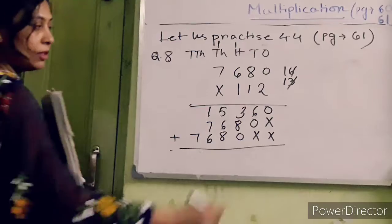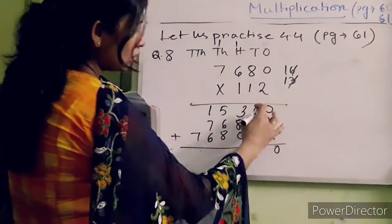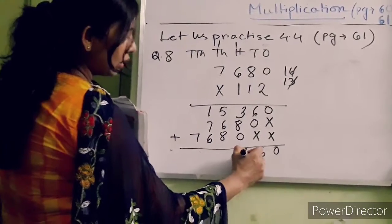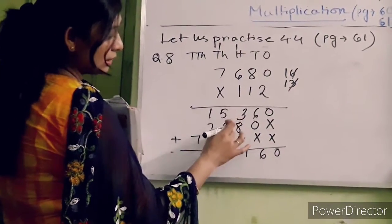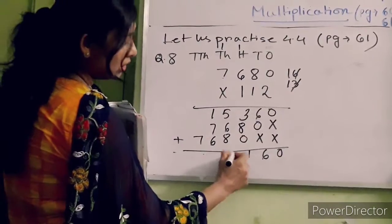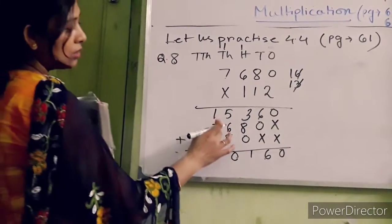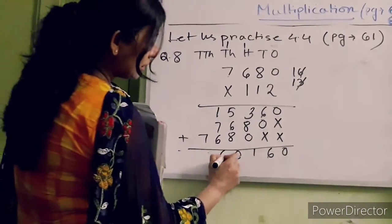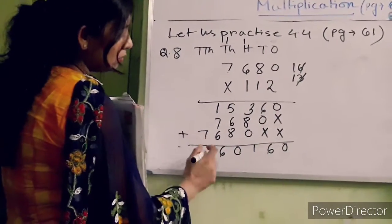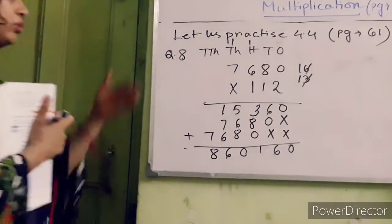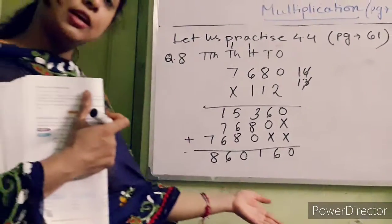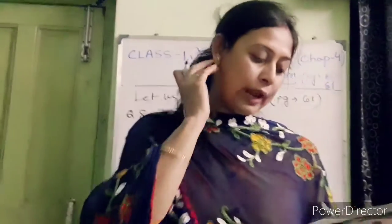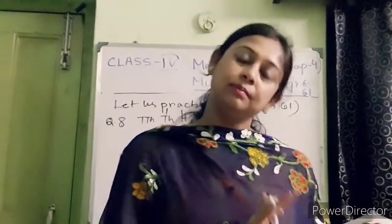Now add all these numbers. Zero, six plus zero is six, three plus eight is eleven — carry one. Five plus one is six, six plus six is twelve — carry one. Two plus one, carry two, seven plus one is eight, eight plus six is fourteen — carry one. Seven plus one is eight. So you will get your answer. Clear — others you will solve in your maths copy. Practice all this math. Thank you.